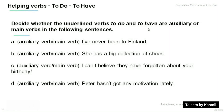Now time for you to practice on your own. Read the following sentences and decide whether the underlined verbs to do and to have are auxiliary or main verbs. A: 'I've never been to Finland.' B: 'She has a big collection of shoes.' C: 'I can't believe they have forgotten about our birthday.' D: 'Peter hasn't got any motivation lately.'